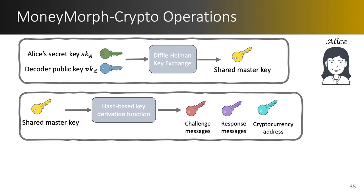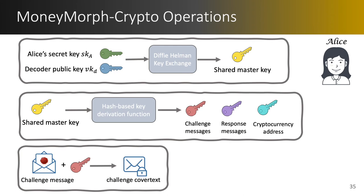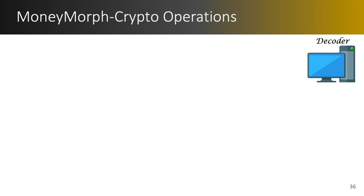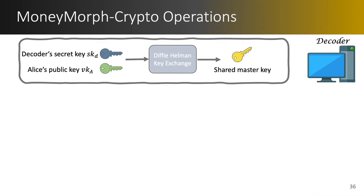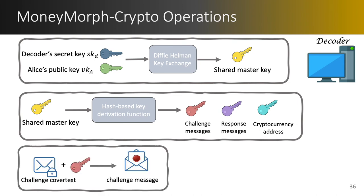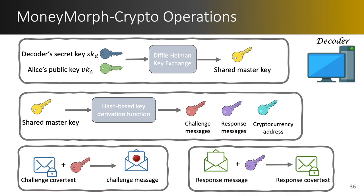The reason we have two different keys for the challenge and response messages is that the length of the corresponding messages can differ, as we use plain symmetric encryption based on one-time pad. Next, we have the encryption of the challenge message to generate the challenge cover text and the decryption of the response cover text to retrieve the response message. The same set of operations is also performed by the decoder, with the difference that Alice's public key is unknown to it. The decoder first extracts Alice's public key from the challenge cover text, then performs the Diffie-Hellman key exchange. The key derivation procedure remains the same; however, the decoder decrypts the challenge cover text that was encrypted by Alice, and to respond to Alice's request, it encrypts the response message to create the response cover text.